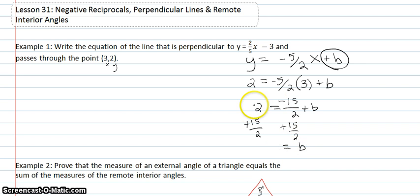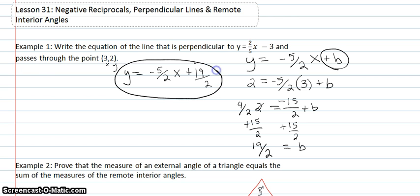b will equal, I'll have to have common denominators, so that'll be 4 over 2. I'll have 19 over 2. So, the line that's perpendicular to the given line is y equals negative 5 over 2x plus 19 over 2. And that will be the equation of our new line.